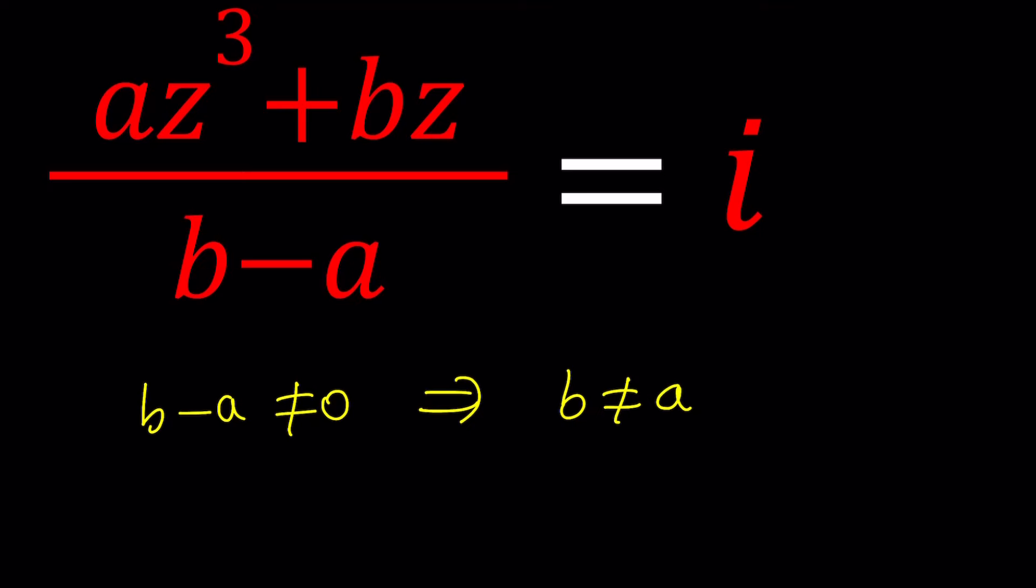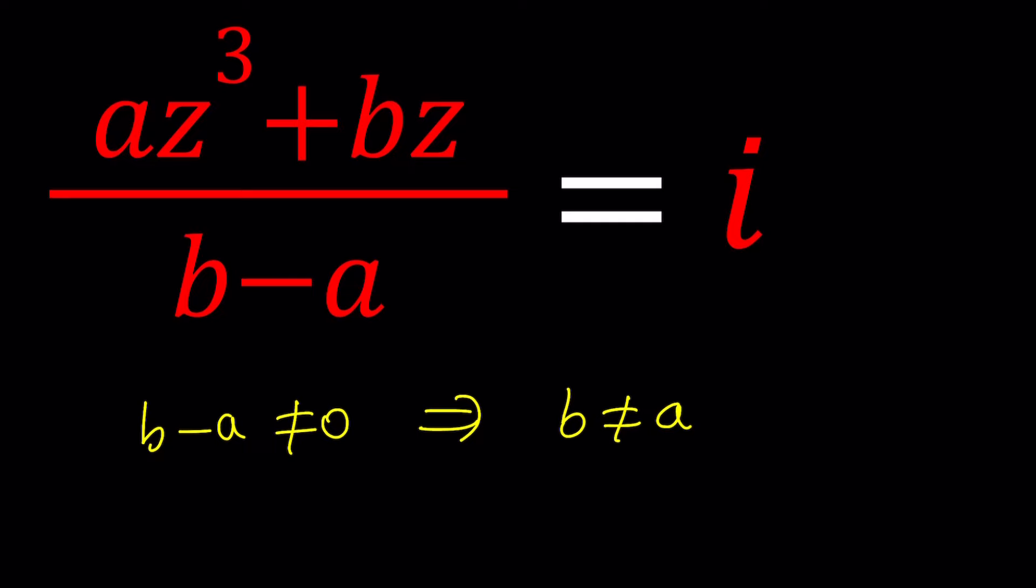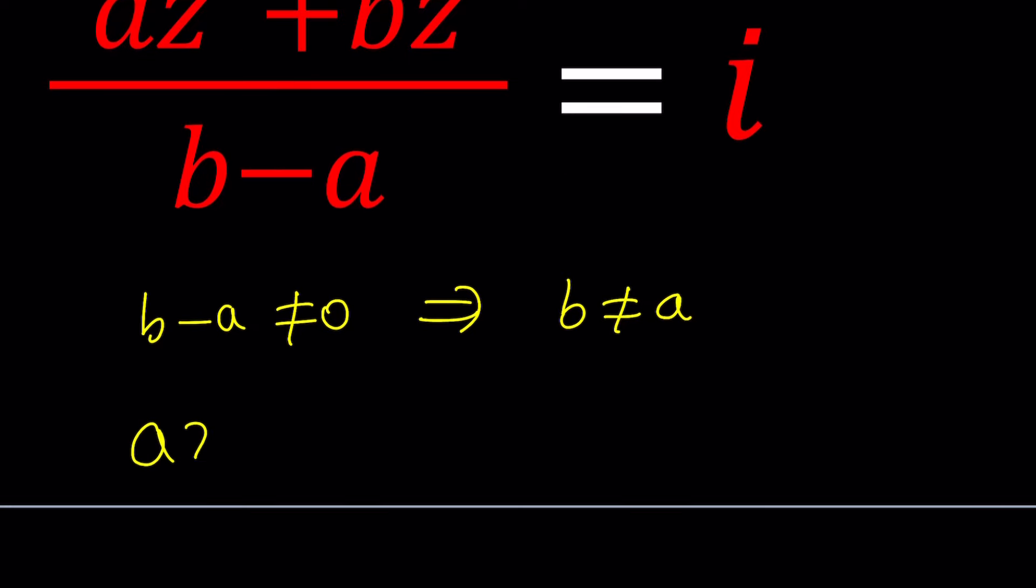Next, we're going to cross multiply, but cross multiplication is actually a little different than the original one. We're not going to have that requirement anymore, but we do need to have that. I hope this made sense. Kind of confusing, but let's go ahead and cross multiply. We get AZ cubed plus BZ equals B minus A multiplied by I, which is BI minus AI. And what is this channel called? A plus B I.